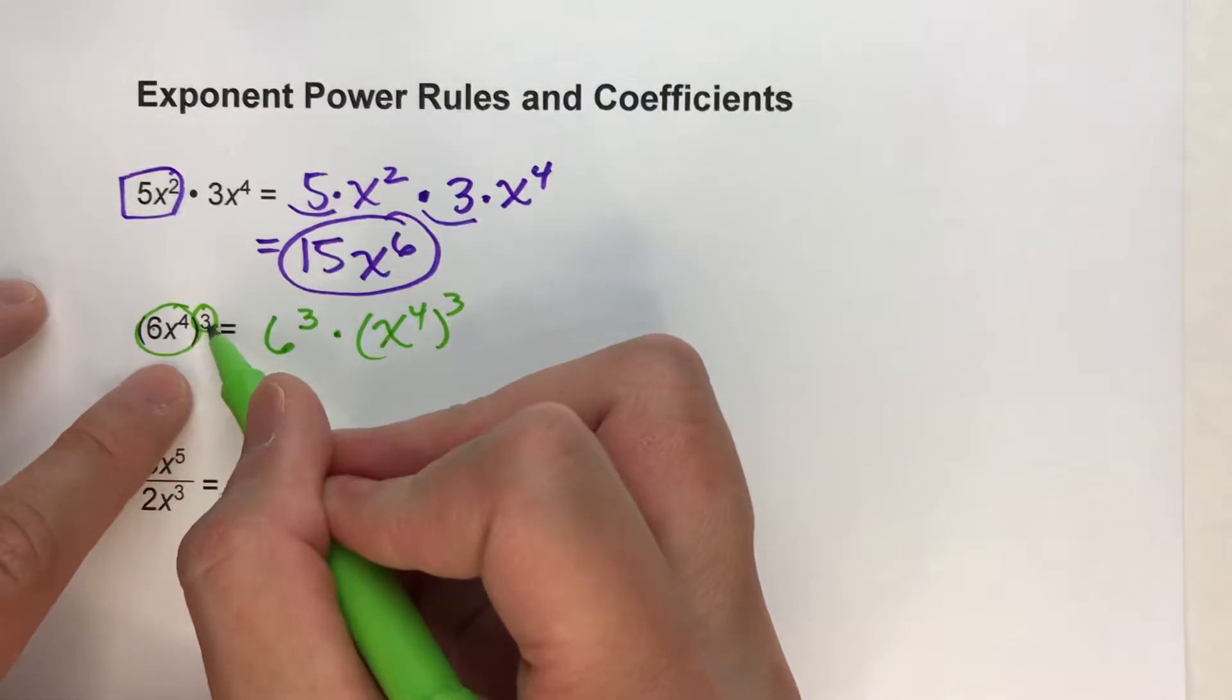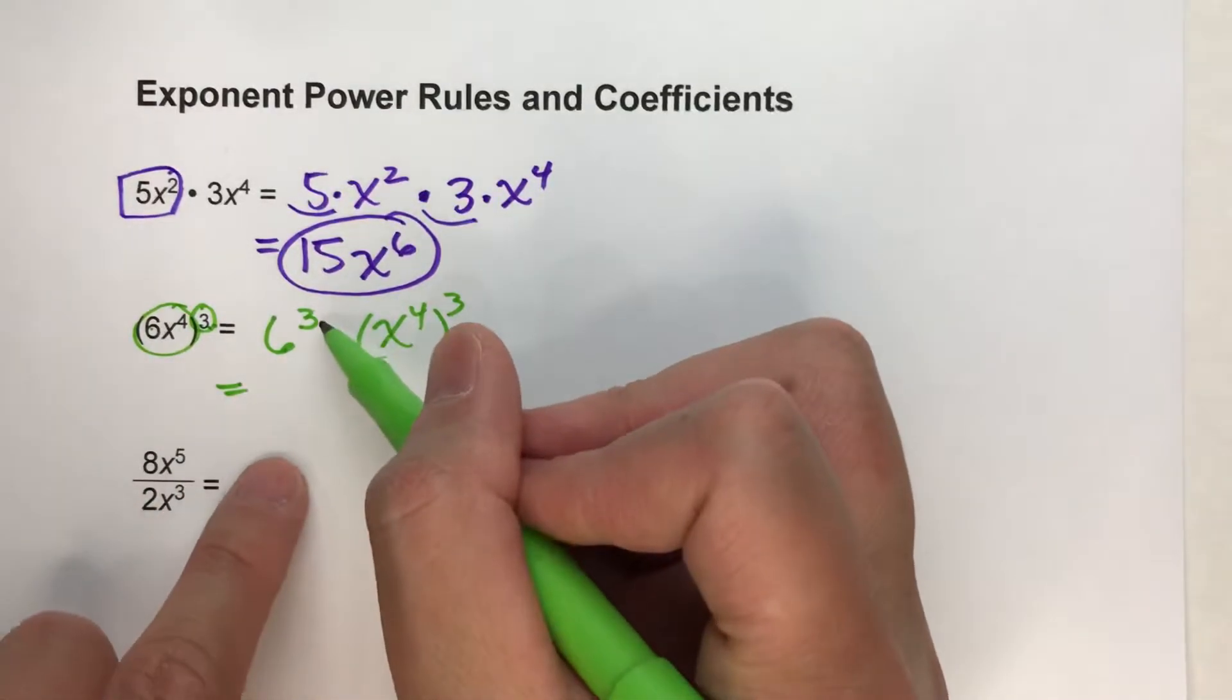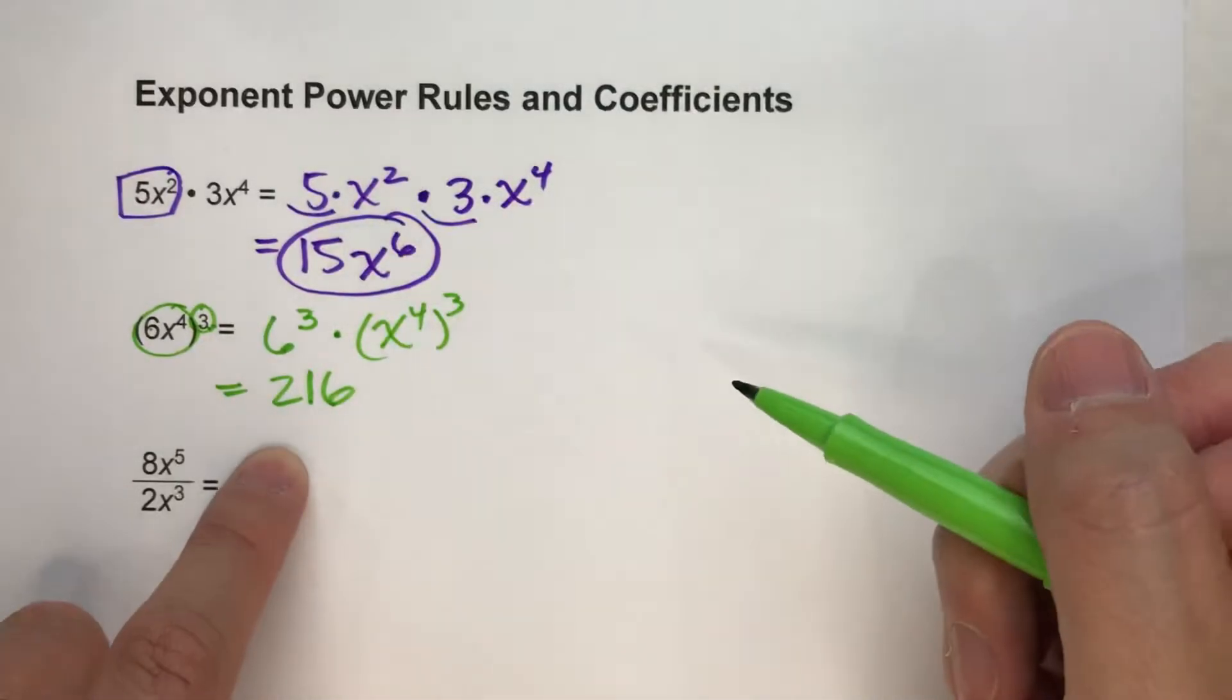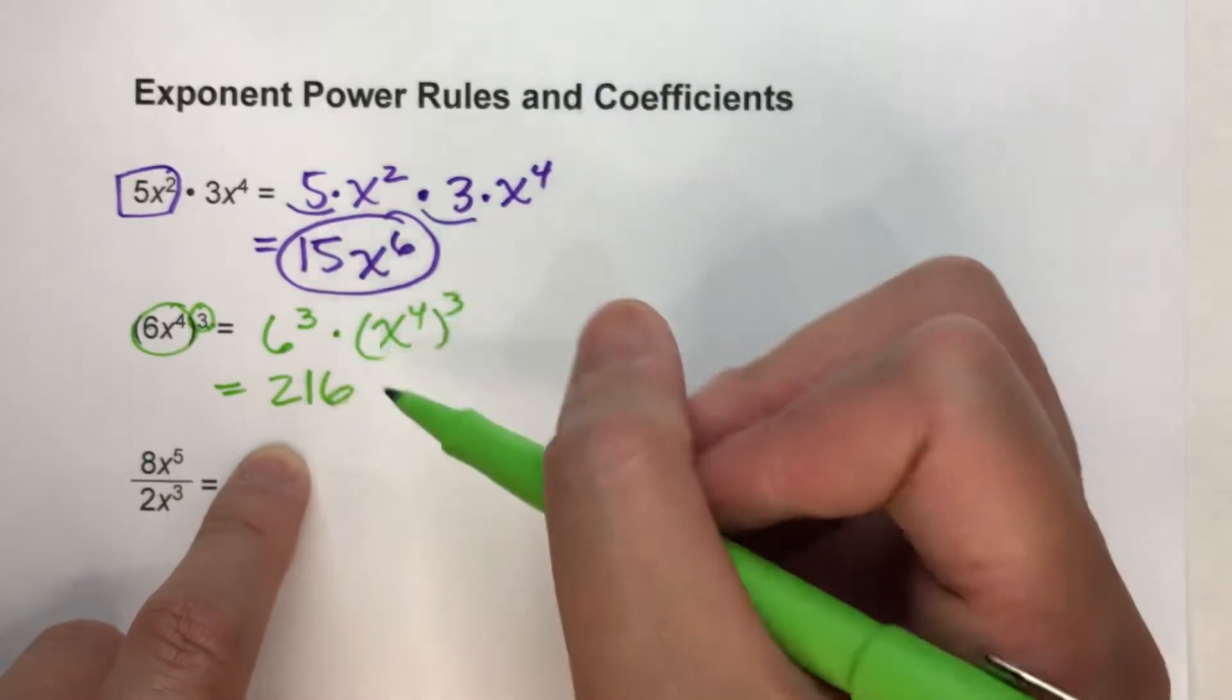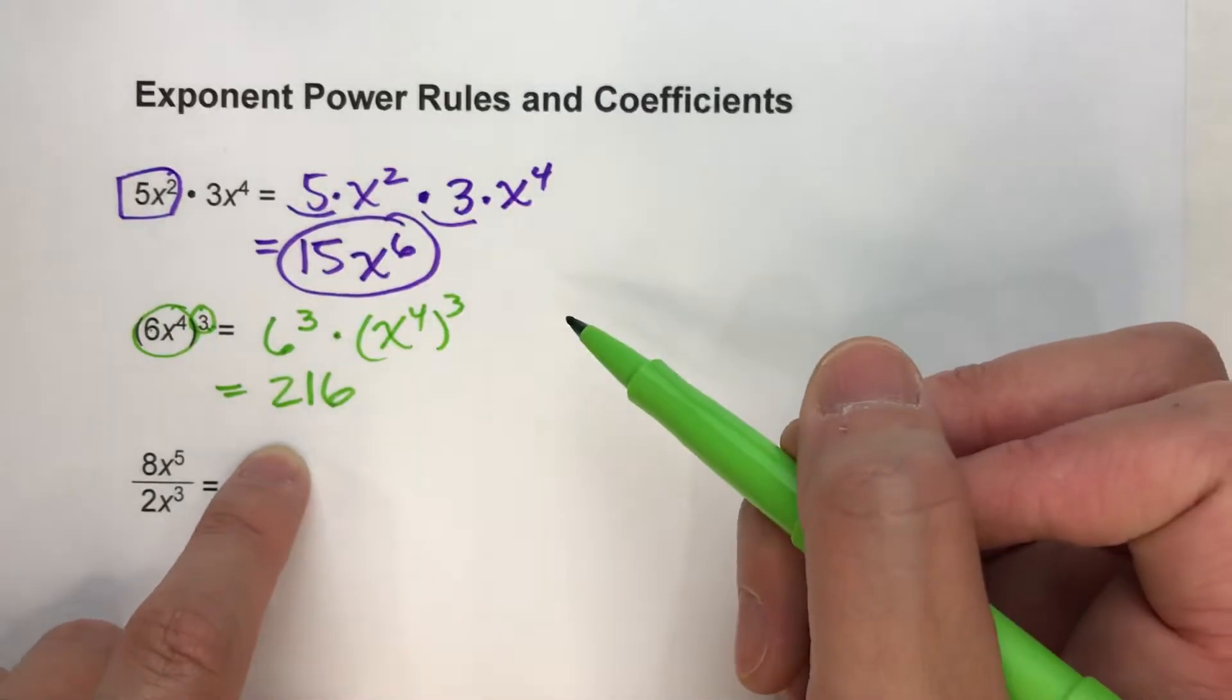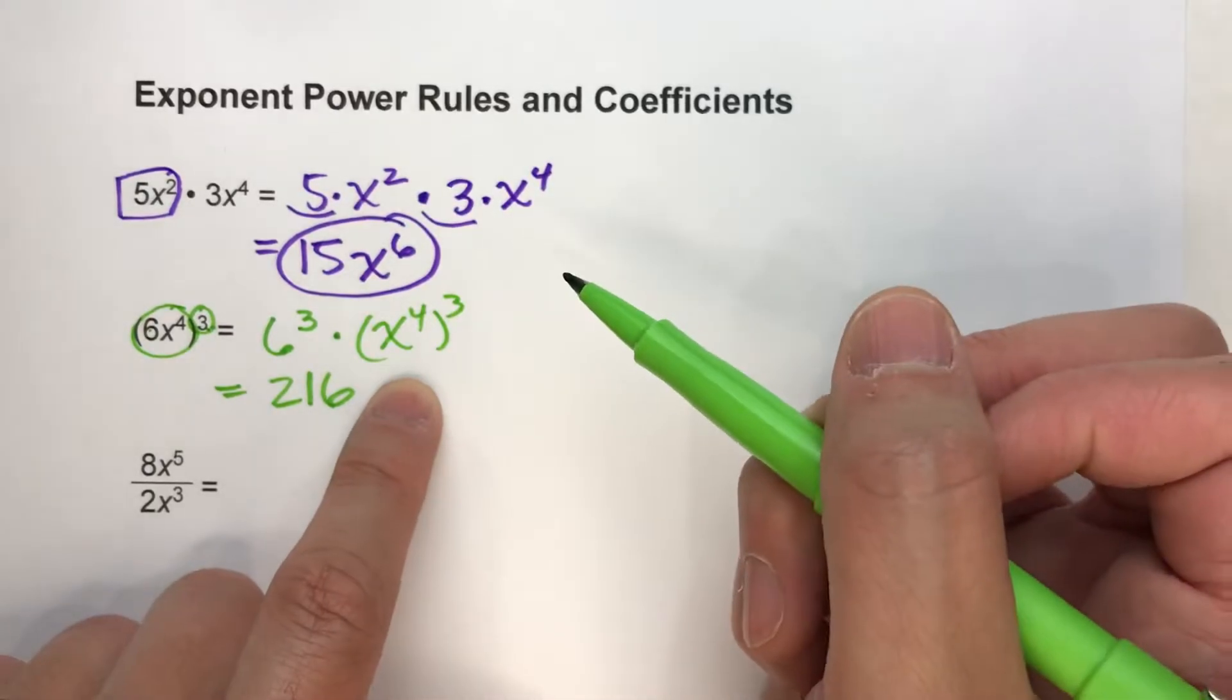So I'm just raising everything in here to the third power. Now, I know 6 to the third power is 216, because 6 times 6 times 6 is 216. So we're just doing basic math with that one. But when I raise x to the fourth to the third power, I have to use the power rules.